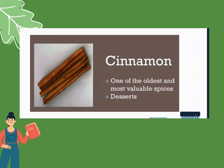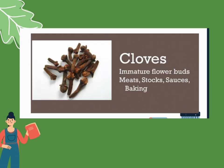Next is cinnamon — one of the oldest and most valuable spices. It has been used for a long time and is considered valuable. It is used mainly for desserts. Next, cloves — immature flower buds that are harvested and dried. Cloves are used for meats, stocks, and sauces, and you can also use them for baking.